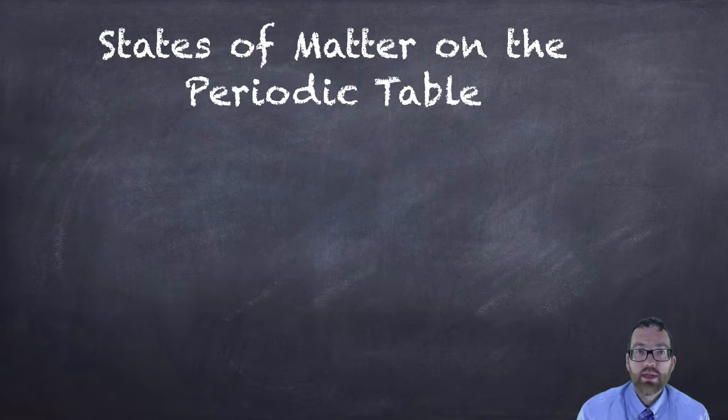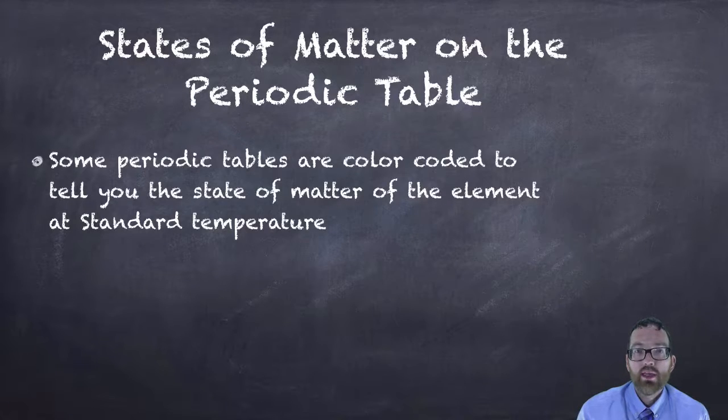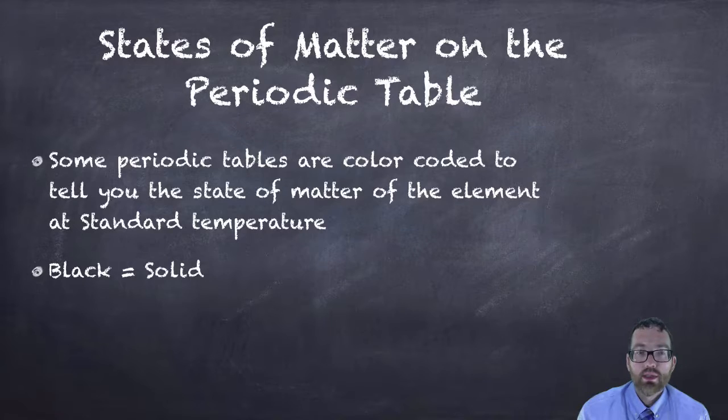Some periodic tables, like the one on our wall in the classroom, are color coded. The colors tell you the state of matter at standard temperature, which would be zero degrees Celsius. We have black which is a solid state of matter, we have red which indicates the gases, and blue which indicates the liquids.